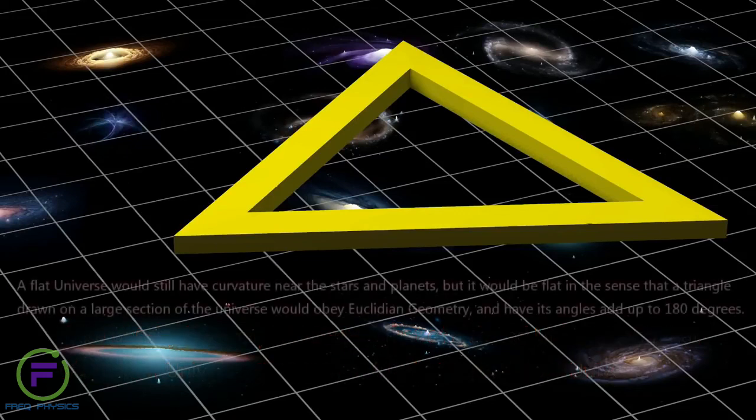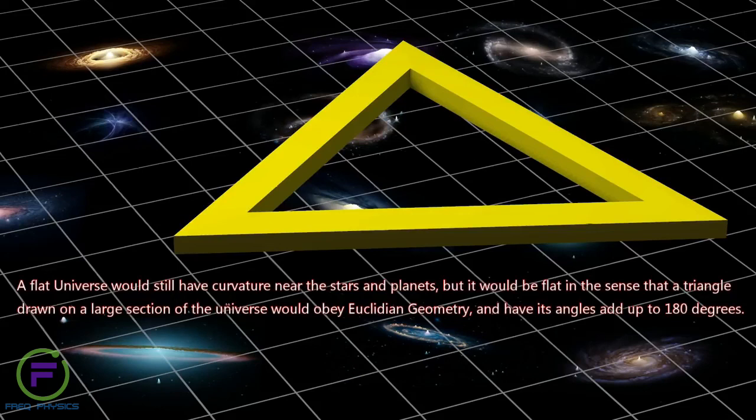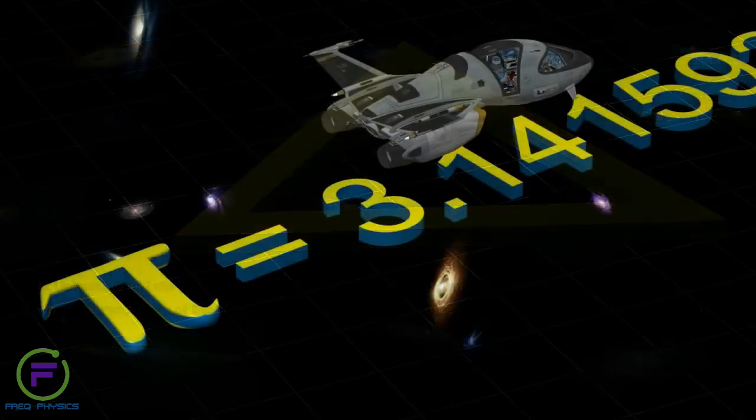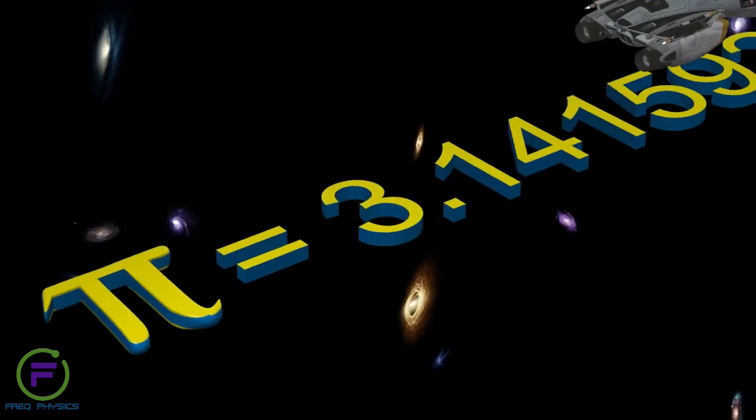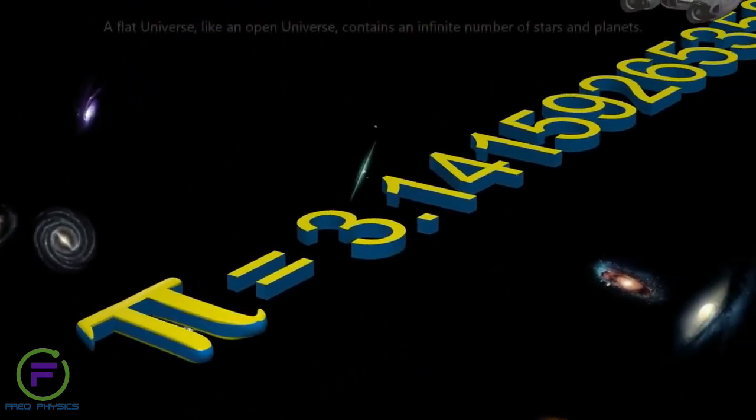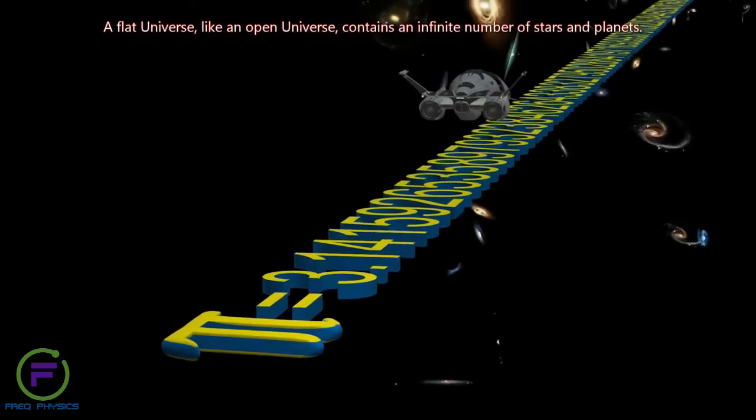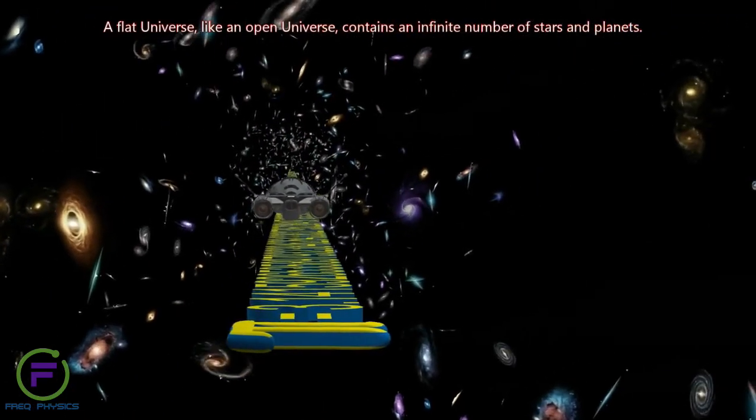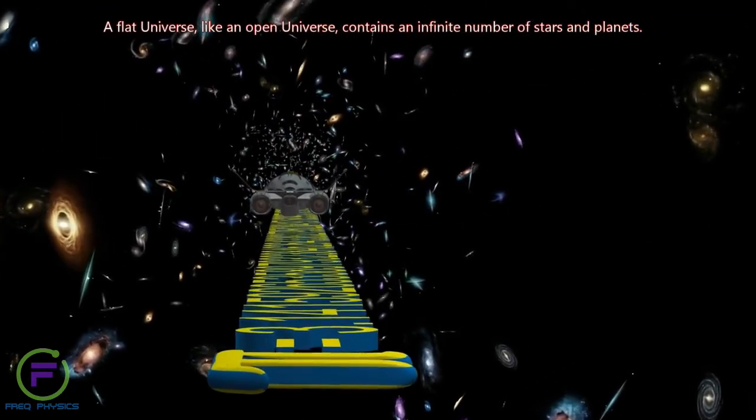A flat universe would still have curvature near the stars and planets, but it would be flat in the sense that a triangle drawn on a large section of the universe would obey Euclidean geometry, and have its angles add up to 180 degrees. A flat universe, like an open universe, contains an infinite number of stars and planets.